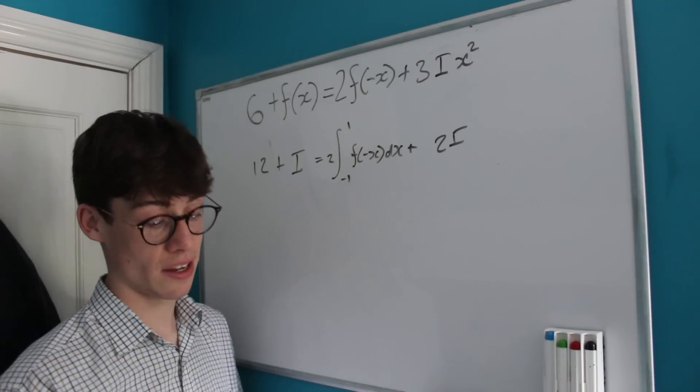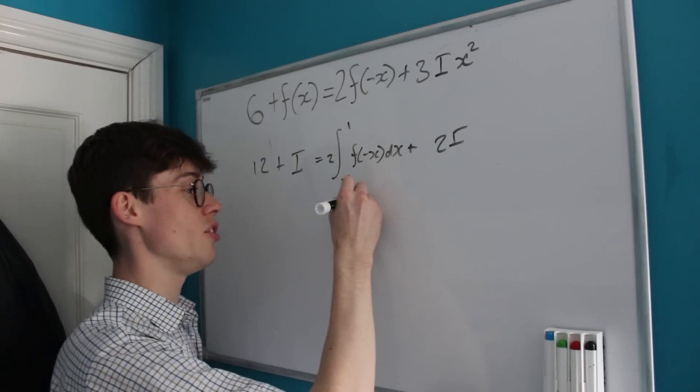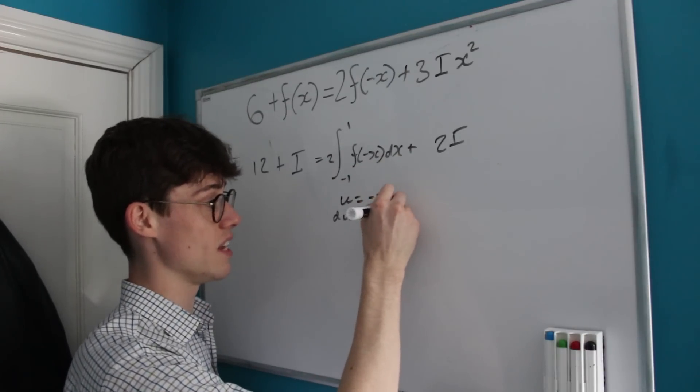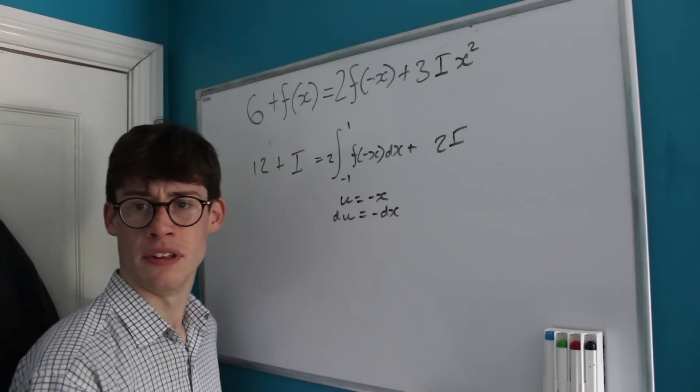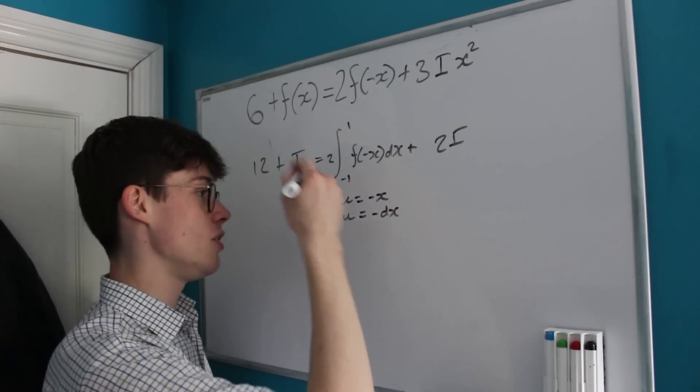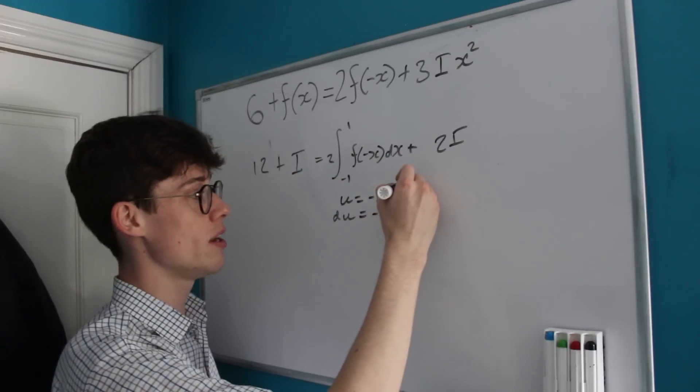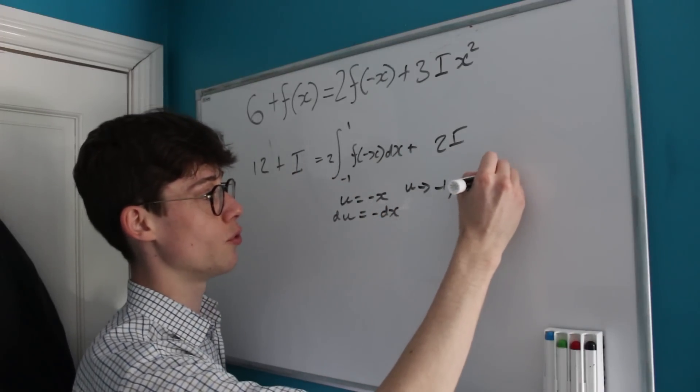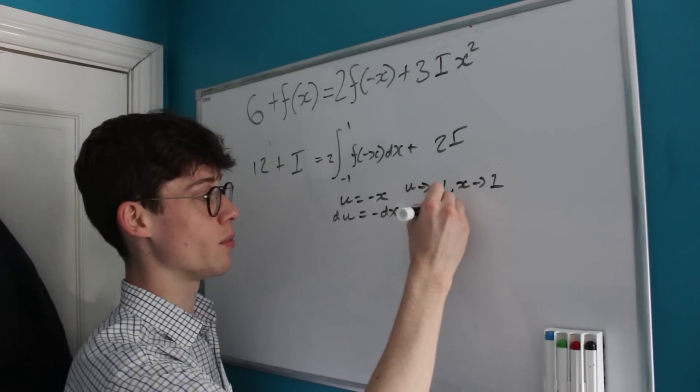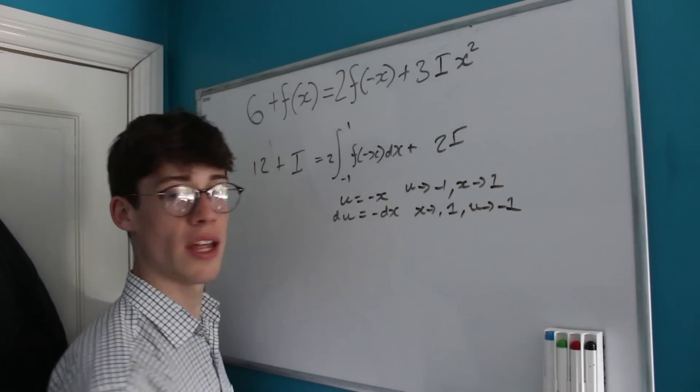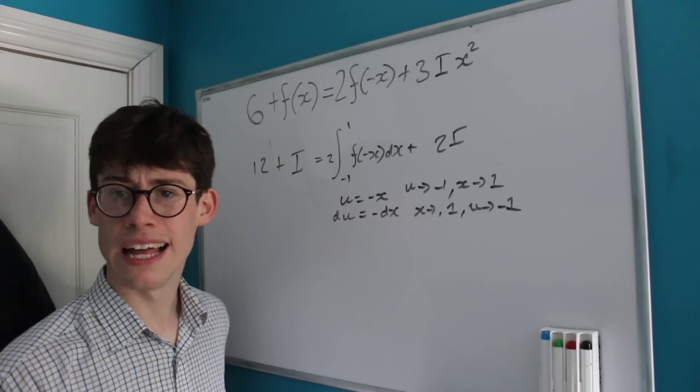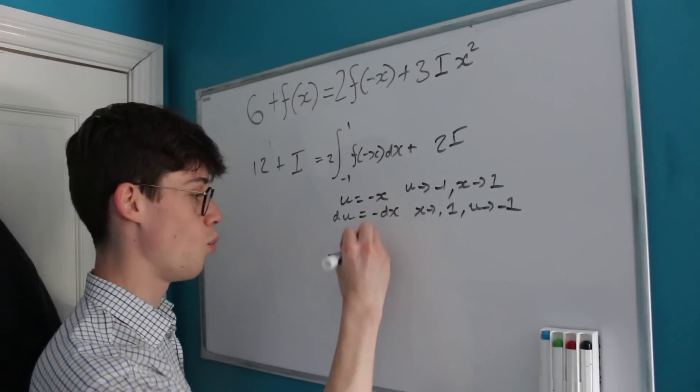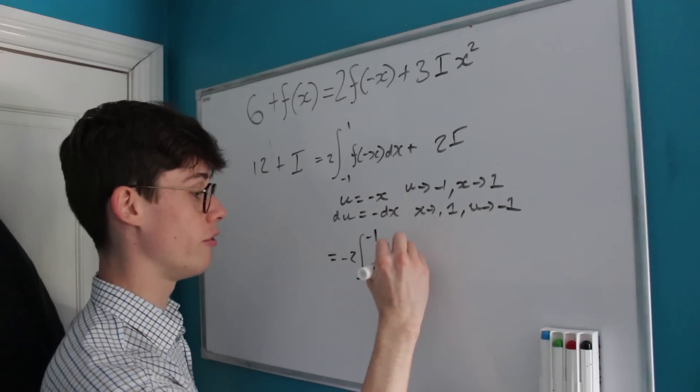If I make the substitution u = -x, which of course means that du is going to equal -dx, let's see what happens. That means that when u is -1, x is going to approach 1, and as x approaches 1, u is going to approach -1.